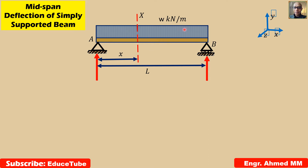This is a beam. It is carrying uniformly distributed loads, which is W kilonewton per meters. Whenever a beam is loaded like this one, it deflects from its original position.